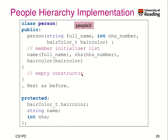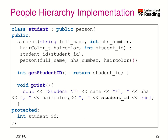We can have an empty constructor body and declare hair color, name, and NHS as protected. The reason is that we want to use them in a student. In the student constructor, we have to get all the data needed for the parent class person: full name, NHS number, and hair color, plus the student ID for the current class. In the initializer list, we initialize person with full name, NHS number, and hair color — calling the person constructor with those three arguments — and also set the student ID, which is also protected.